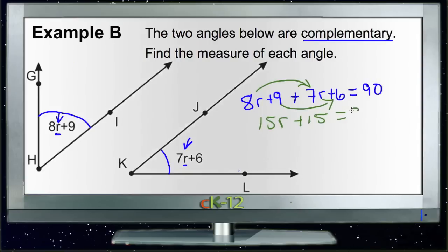Then if we subtract 15 from both sides, we'll have just 15R on the left-hand side, and we'll have 75 on the right-hand side.